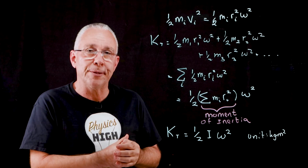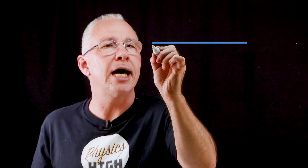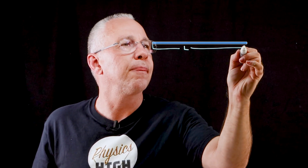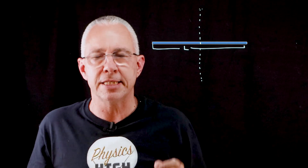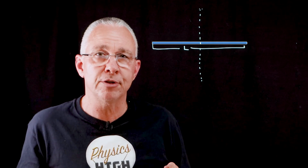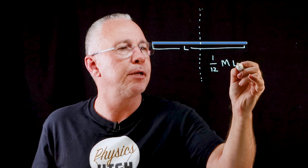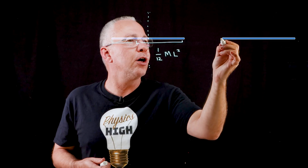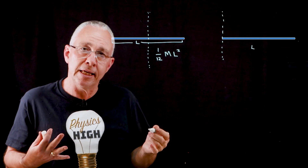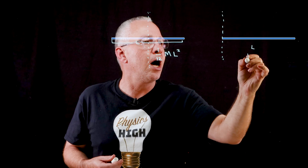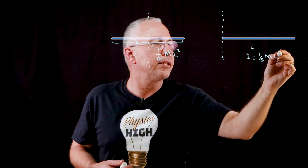Fortunately we have moment of inertia formulas for regular objects. For example, consider a rod of length l rotated about its centre axis: the moment of inertia is one twelfth times the mass times the length squared (I = (1/12)ml²). Now if we take the same rod of the same length but this time rotate it about one end, the moment of inertia is one third times the mass times the length squared (I = (1/3)ml²).